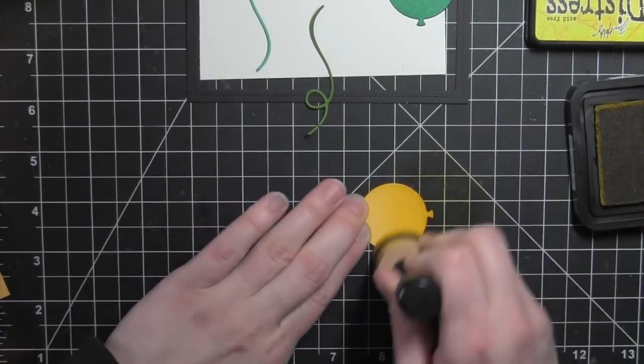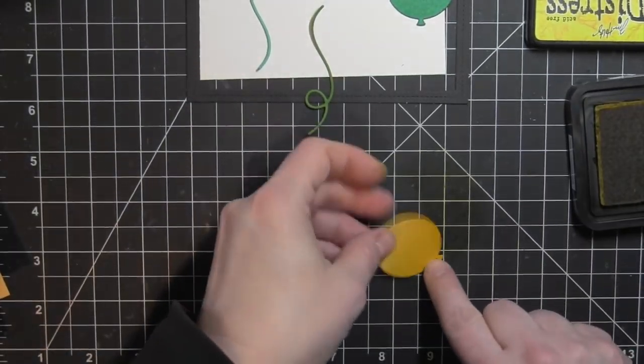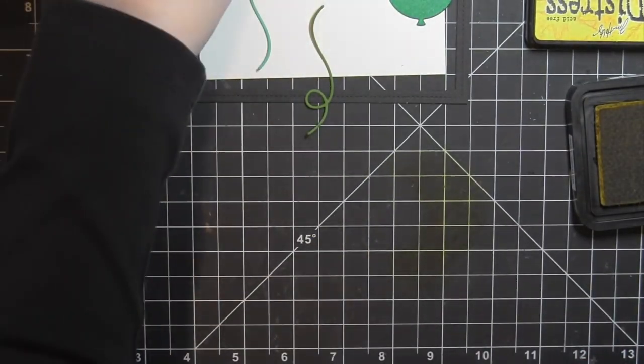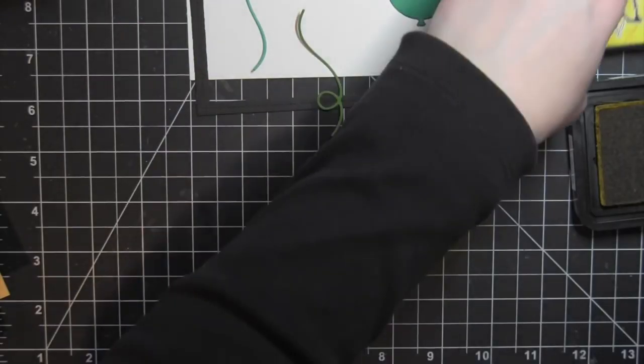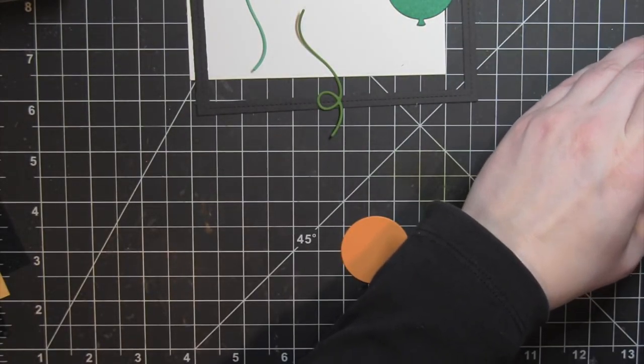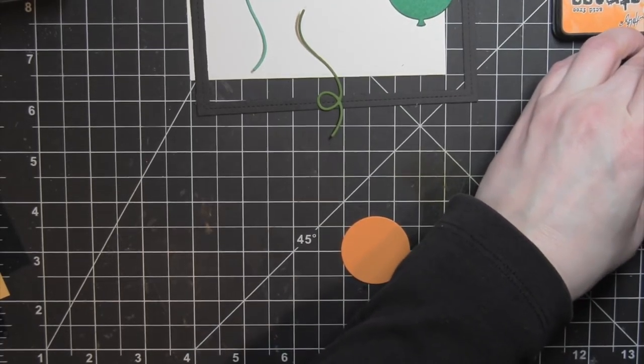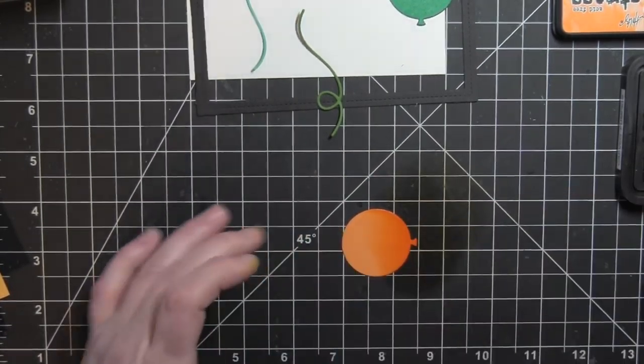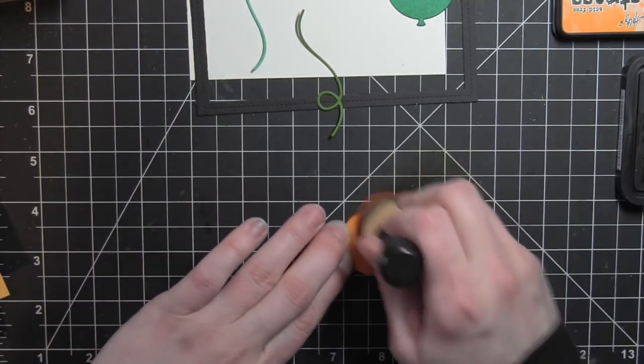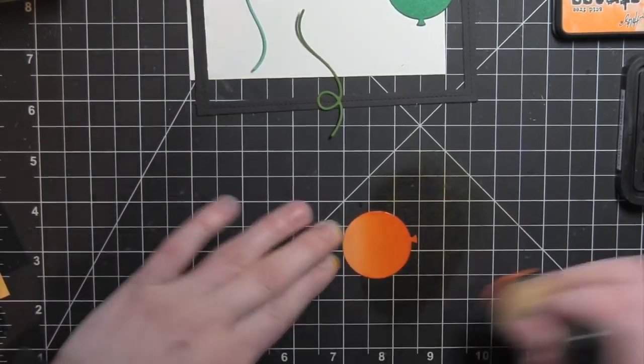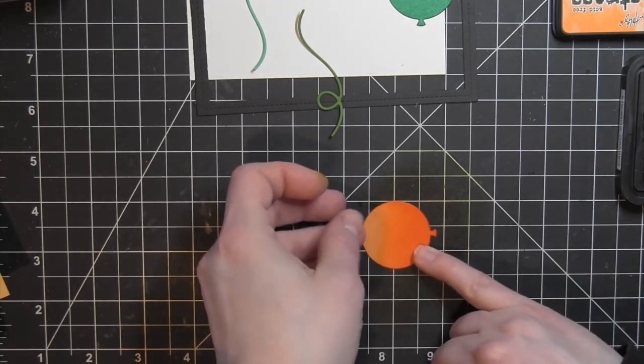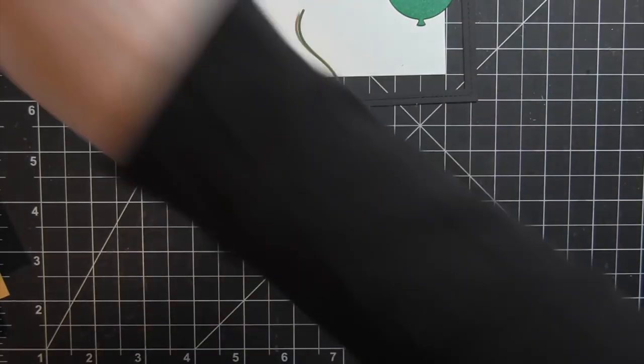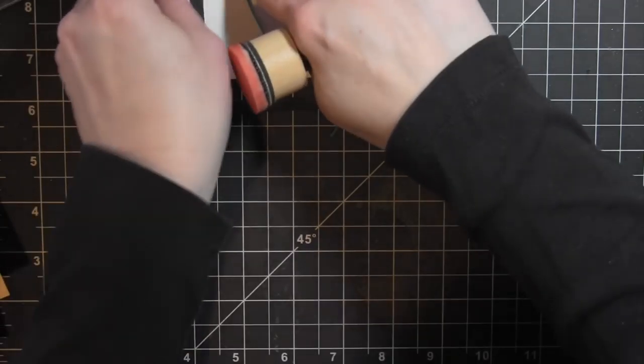You could definitely leave this step out if you didn't want to spend the time adding the distress ink to the balloons. You could also add a different color to the balloons, and then the red balloon is using the Candied Apple Distress Ink.